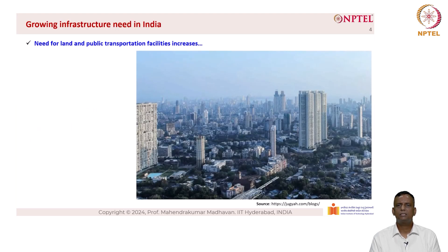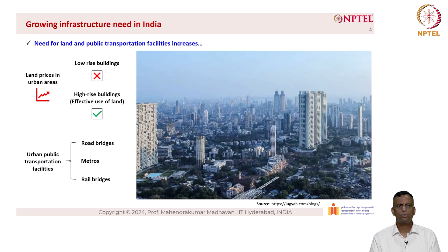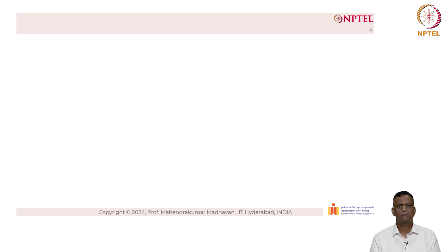This puts a tremendous pressure on our urban infrastructure, so there is a need for land and public transportation facilities to be increased. Land prices in urban areas are skyrocketing and we cannot afford low-rise buildings, so effective use of land can be accomplished by high-rise buildings. Urban transportation facilities should also be significantly improved, including road bridges, metros, and rail bridges. All these are possible only if we select the right building material for the infrastructure.